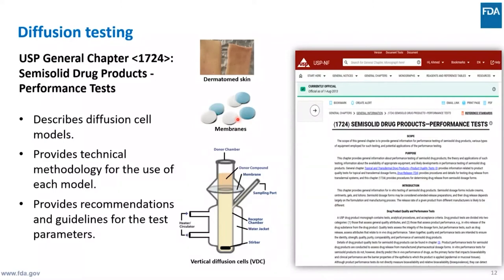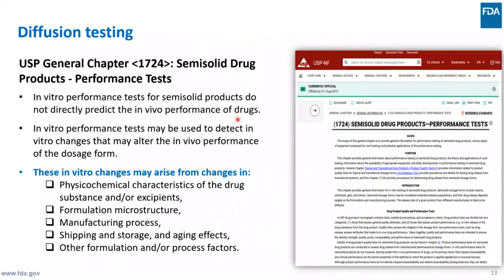The new Chapter 1002 will be developed by USP to address diffusion membranes and their characteristics. It is worth mentioning that in vitro performance testing is not necessarily used to predict in vivo performance of the drug. In vivo performance depends more on the permeability and barrier function of skin rather than diffusion from the matrix of the drug product. However, in vitro release testing may be used to predict in vitro changes that could alter in vivo performance.